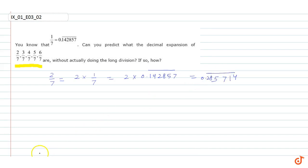Similarly we can calculate the value of 3/7 also. So 3/7 is equal to 3 times 1/7. And 1/7 is equal to 0.142857 bar. So now what do we do?